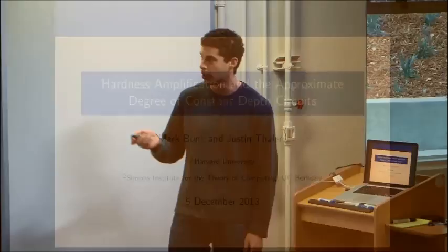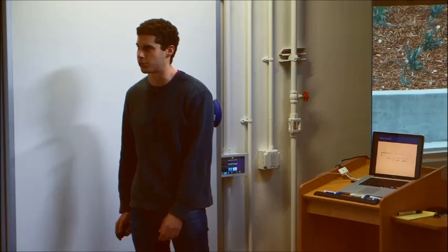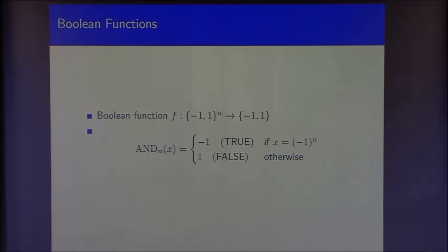I'll start with some standard notation. Throughout this talk, F will denote a Boolean function mapping {-1, 1}^n to {-1, 1}, and we'll associate -1 with logical true and +1 with logical false. For example, the AND function will evaluate to -1 if all of its inputs are equal to -1, and will evaluate to +1 otherwise.